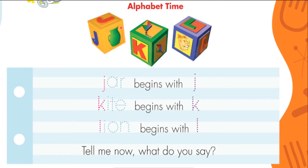Ahora vamos a revisar las figuritas que encontramos en estos dados. Jar. Jarra. Kite. Cometa. Lion. León. Revisemos nuevamente las letras: J, K, L. Ahora las imágenes: Jar, Kite, Lion.